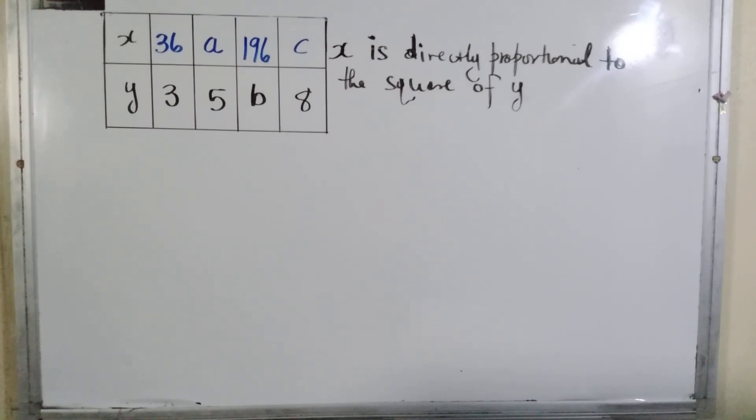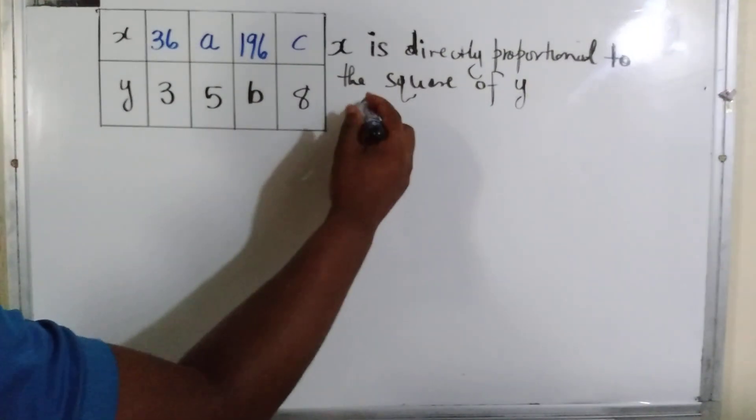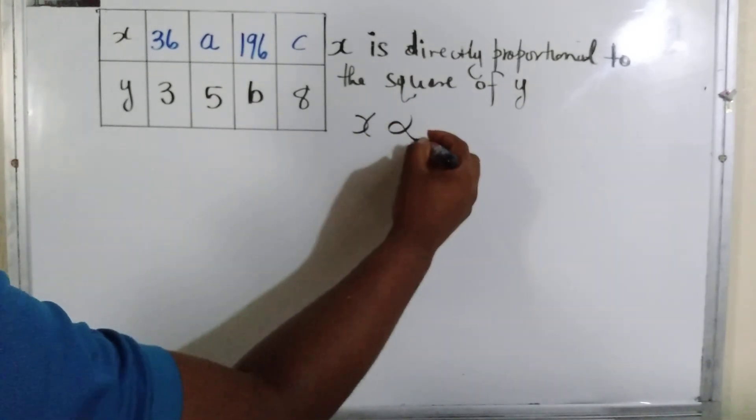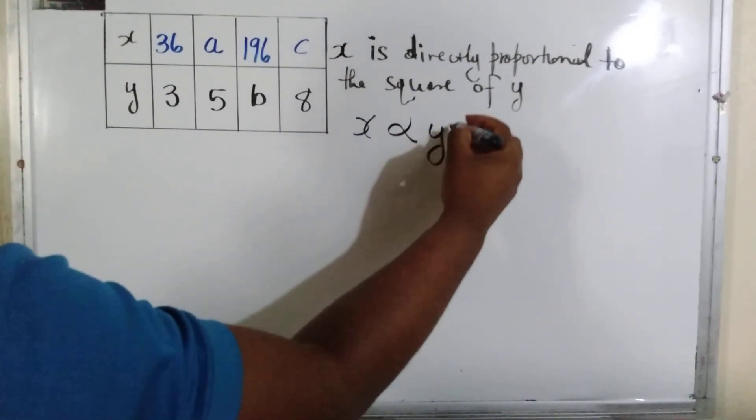Now x is directly proportional to the square of y. What we do is just rewrite it like we normally do: x is directly proportional to the square of y.